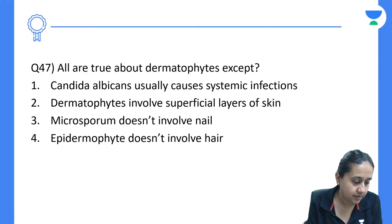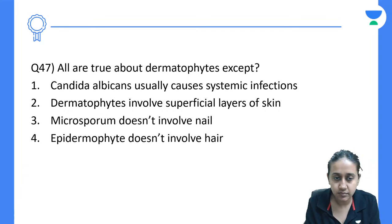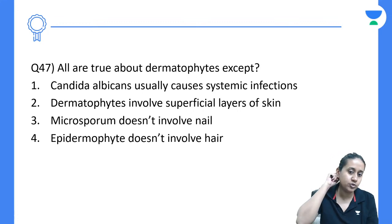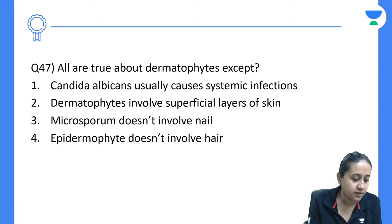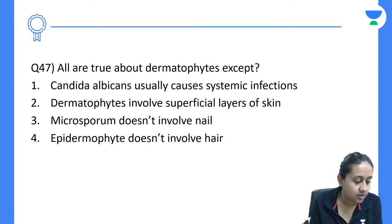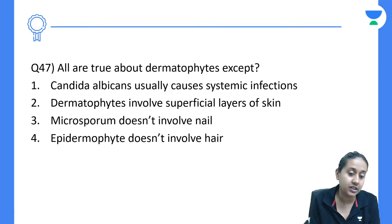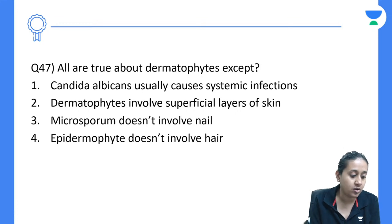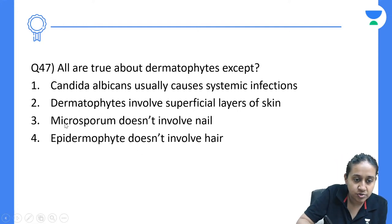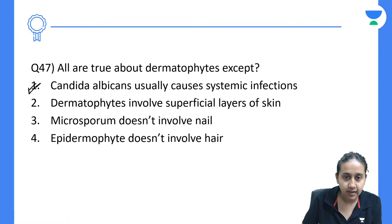All are true about dermatophytes except: Candida albicans usually causes systemic infections — this is incorrect because candida causes superficial infections, not systemic. Dermatophytes involve superficial layers of skin — true. Microsporum does not involve the nail — true. Epidermophyton does not involve the hair — true. The answer is option number 1. Chronic periungual infection occurs secondary to candida — it is the inflammation of the periungual nail folds.